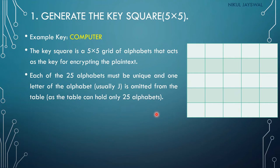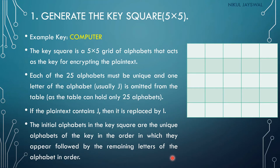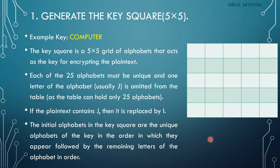Let's say our example key is the word COMPUTER. We start by filling the key characters into the grid: C, O, M, P, U, T, E, R. These are placed first in the key square, each character in its own block.